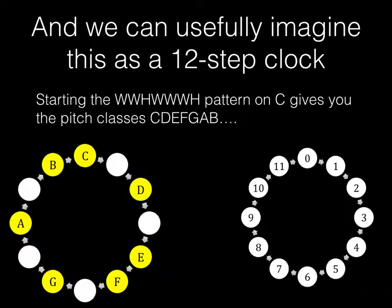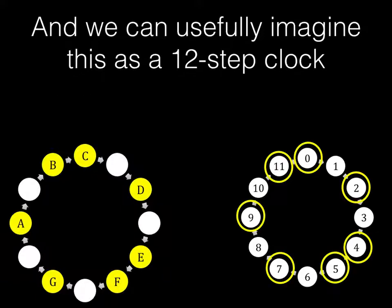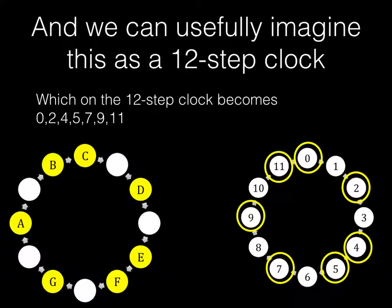And so if you start the whole, whole, half, whole, whole, whole, half pattern on C, this will give you the pitch classes C, D, E, F, G, A, B in our regular C major scale. But if we align it with numbers on the 12-step clock, you get 0, 2, 4, 5, 7, 9, and 11.